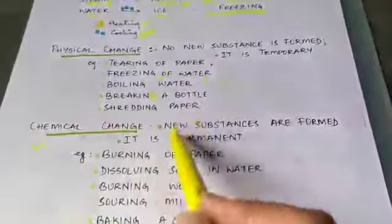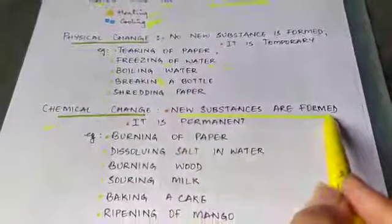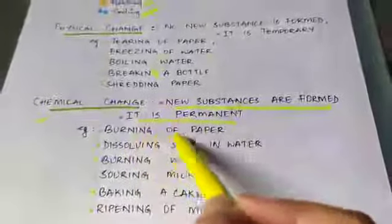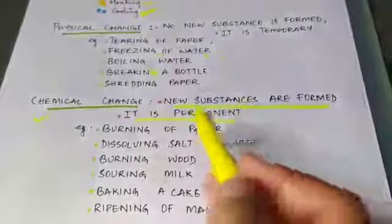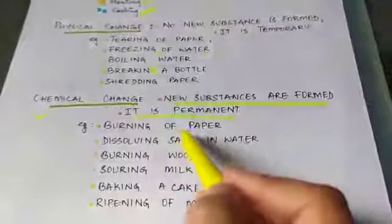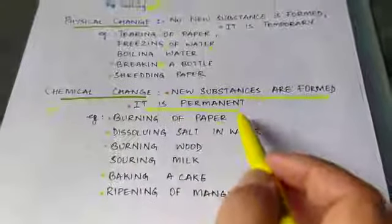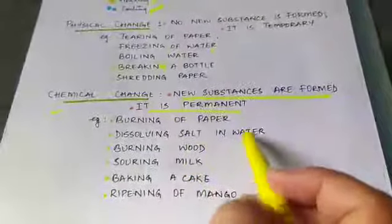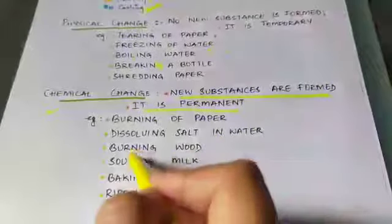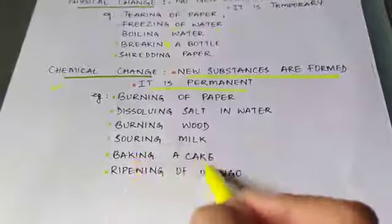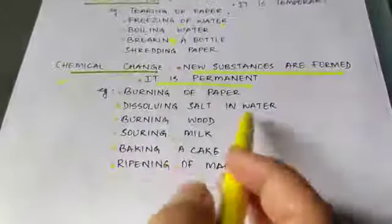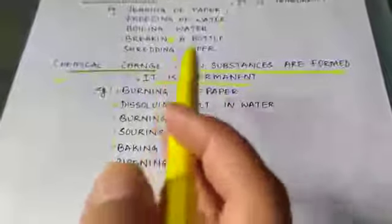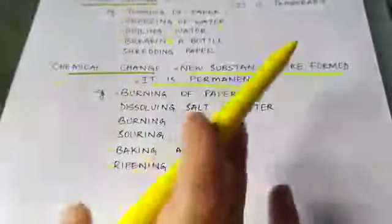In chemical change, when a change occurs, new substances are formed, and this change is permanent. For example, burning of paper — once you burn paper, it forms ash and you cannot change it back to paper, so it is irreversible. Other examples include dissolving salt in water, burning wood, souring of milk, baking a cake, and ripening of mango. Chemical changes are changes in which new substances are formed, they are permanent and cannot be reversed.